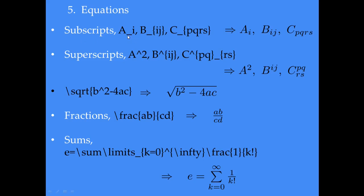To write equations — for example A sub i — you do capital A and then the underscore followed by i. The underscore symbol is for subscripts. You can also do superscripts using the caret (up arrow) character. You can get superscripts and subscripts for various formulas. For the square root command, you put the expression within the \sqrt command. For fractions, you use the \frac command to get the numerator over the denominator — for example, AB over CD. You can also write sums.